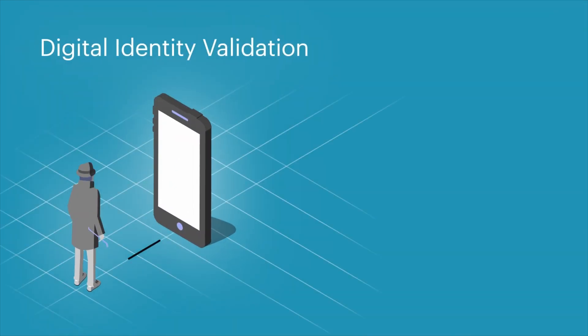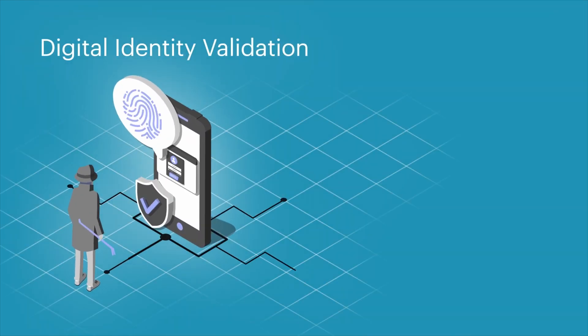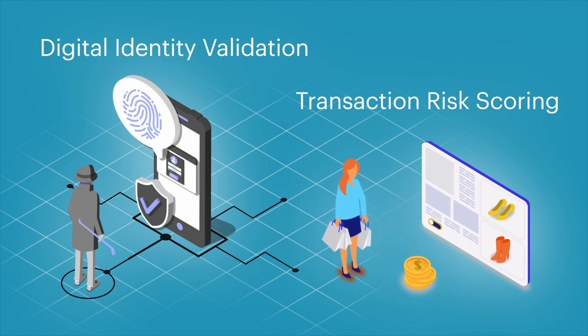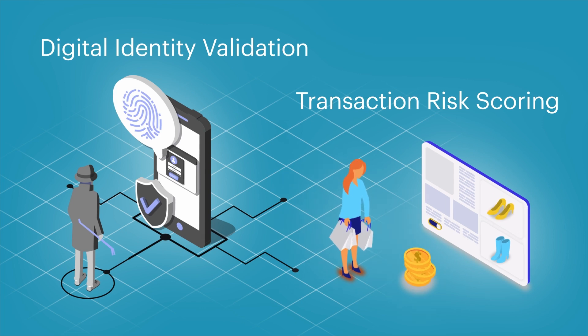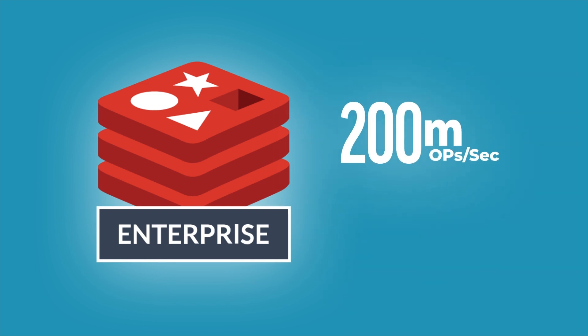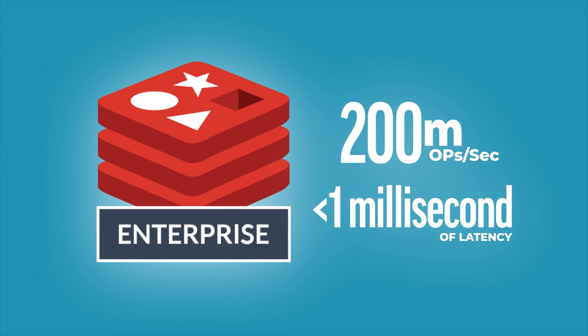In this demo, we will cover two solutions that can help us build a super fast and efficient fraud detection solution. First, we'll cover digital identity validation, which helps companies process dynamic and complex identity data coming from multiple data sources in various data types to validate a user's actions or access. Then we'll finish with transaction risk scoring, where Redis enables fast serving of features for deploying machine learning risk scoring models in real time. Both of these solutions benefit from Redis Enterprise's multi-model support and innate ability to process hundreds of millions of operations a second with less than one millisecond of latency.